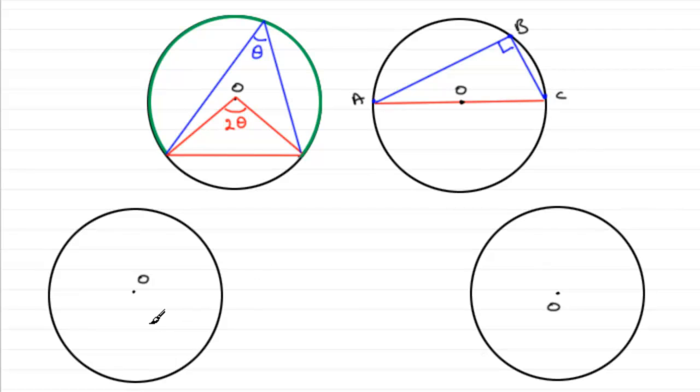OK, here's another one that you should be familiar with. If you've got a tangent to a circle, a line that just touches it at one point, say here, then the angle made by the radius to that point with the tangent is always 90 degrees.